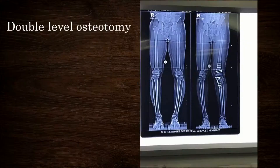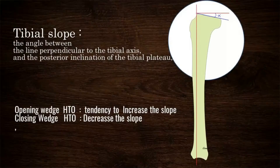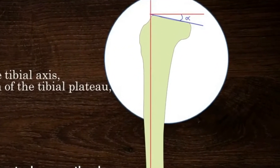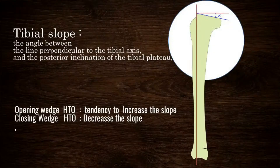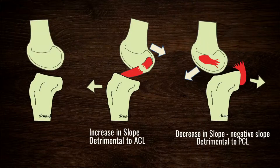Distributing the correction across both femur and tibia in a double-level osteotomy would prevent joint obliquity. The tibia normally slopes posteriorly by 7 to 9 degrees and ideally the tibial slope should not be changed during HTO. However, opening wedge osteotomy has a tendency to increase the slope while closing wedge osteotomy decreases it. In an ACL-deficient knee the slope should not be increased, and in a PCL-deficient knee the slope should not be decreased.